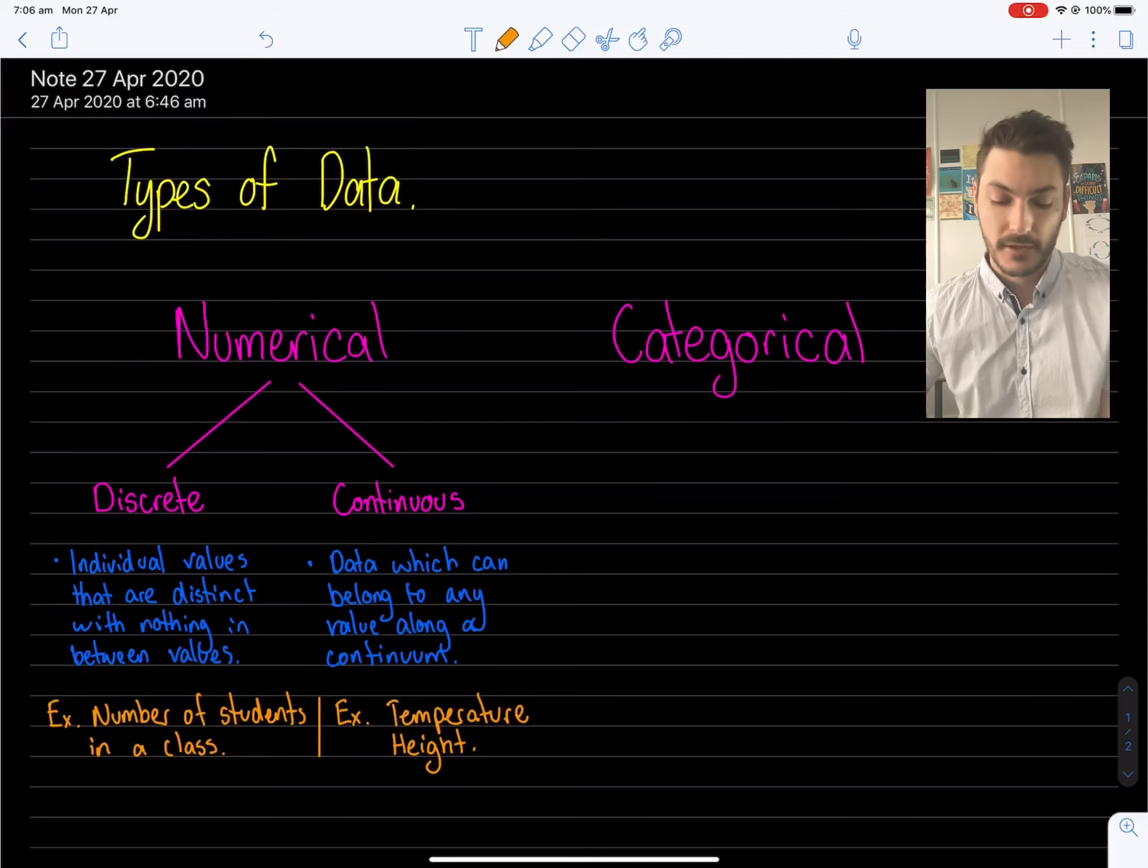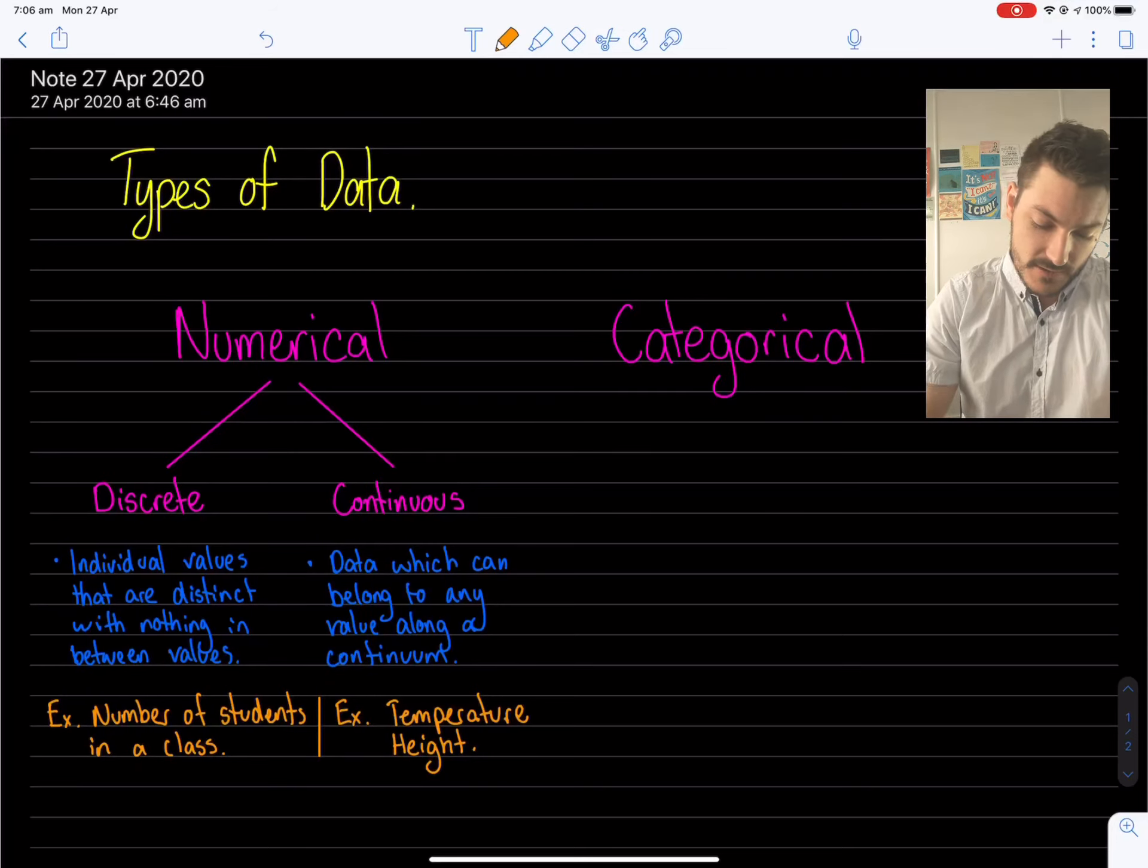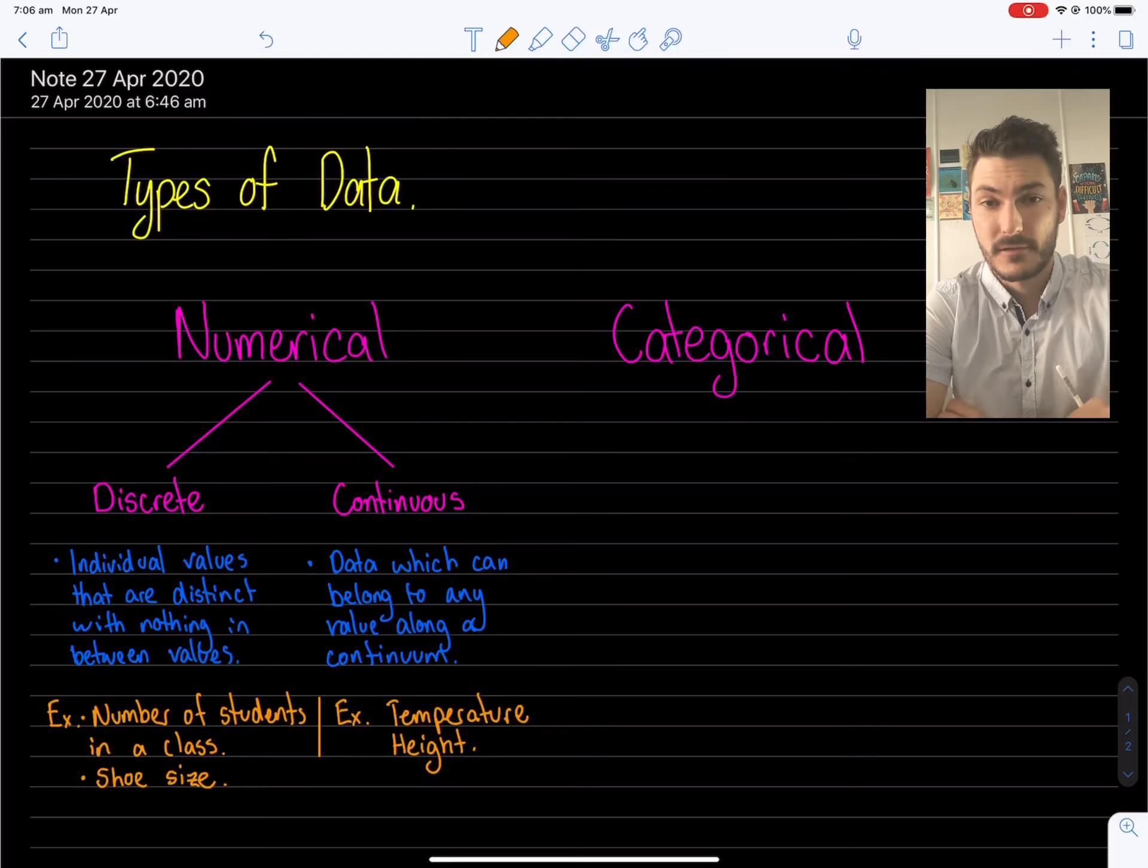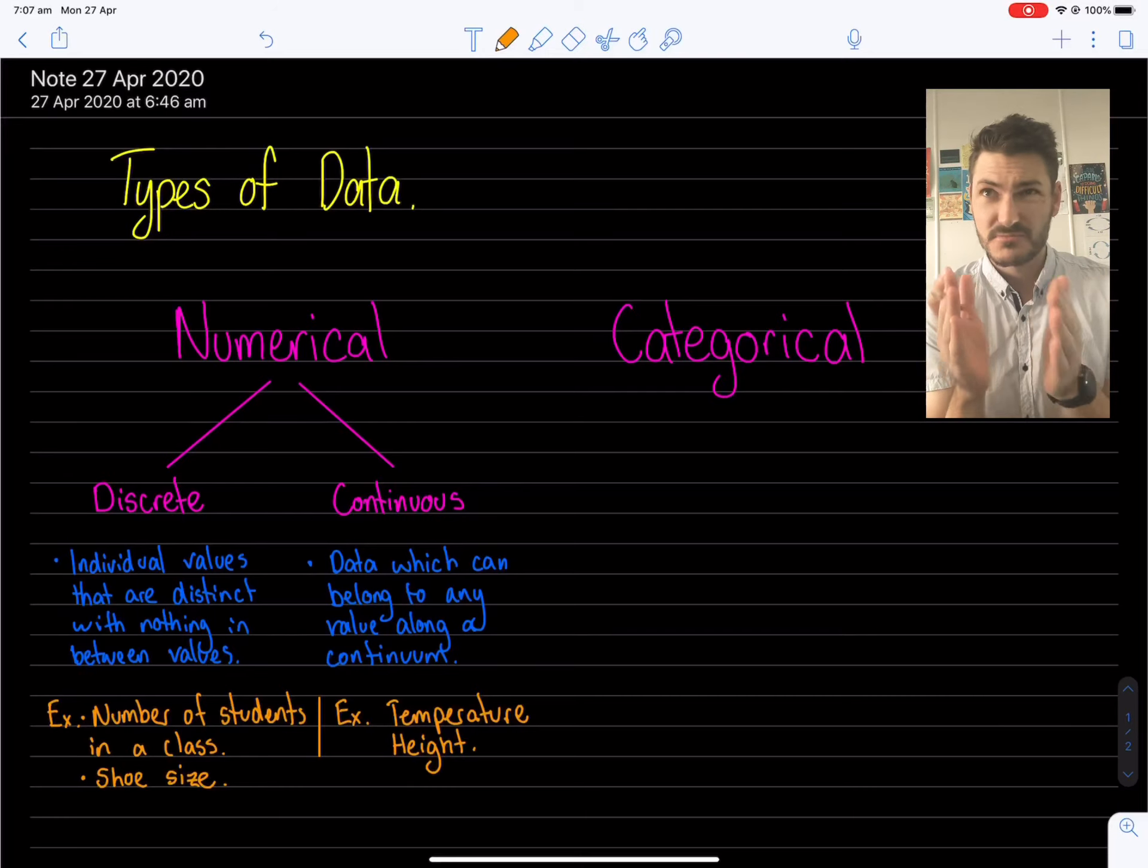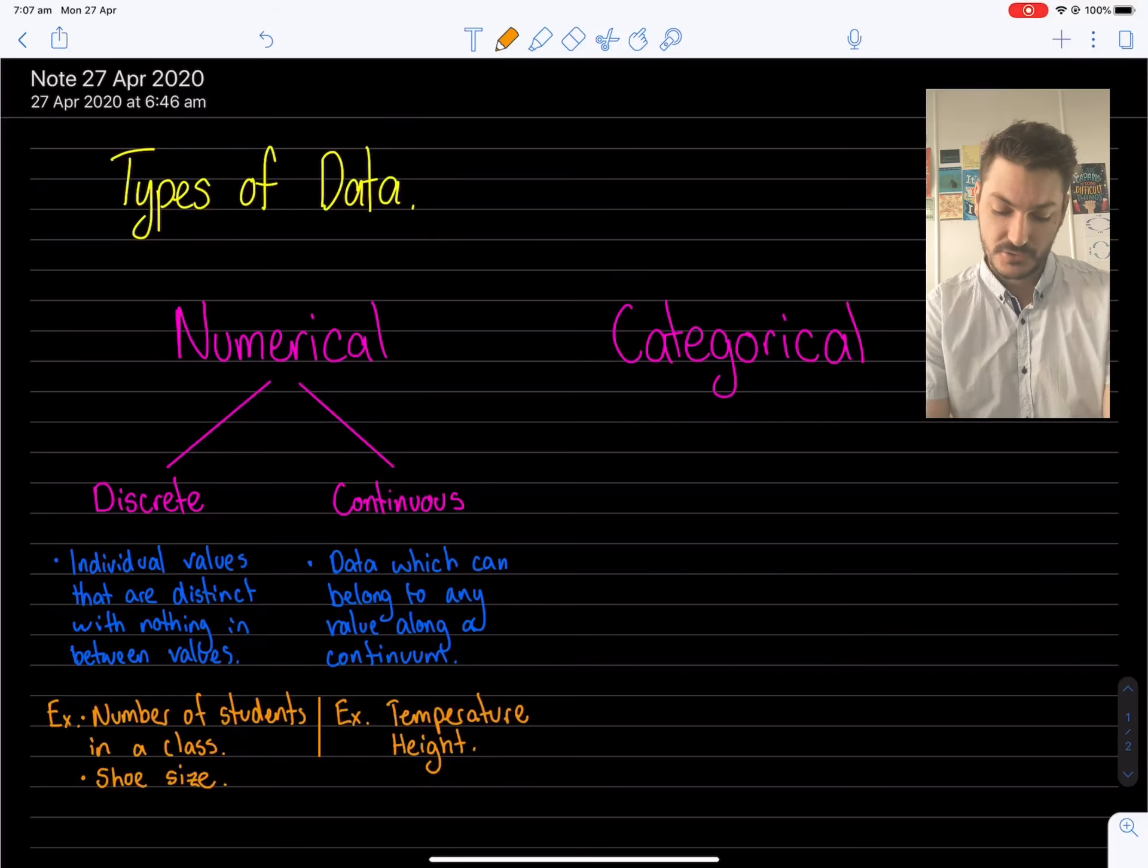Now I want to put an example out there for discrete data that has decimals. Yes, that's right, discrete data that has decimals. And this example is going to be shoe size. Just because you can get a shoe size that's seven and a half does not automatically make it continuous, because there's nothing between a size seven and a seven and a half. There's size seven, then seven and a half, and there's no 7.25. So despite the fact that shoe size has decimals sometimes, size seven, size seven and a half, size eight, size eight and a half, they're still discrete and distinct values that go from one to the other, and there's nothing in between those values. So shoe size is another example of discrete numerical data.